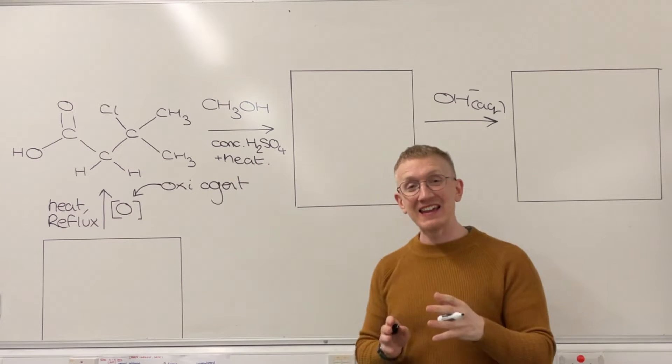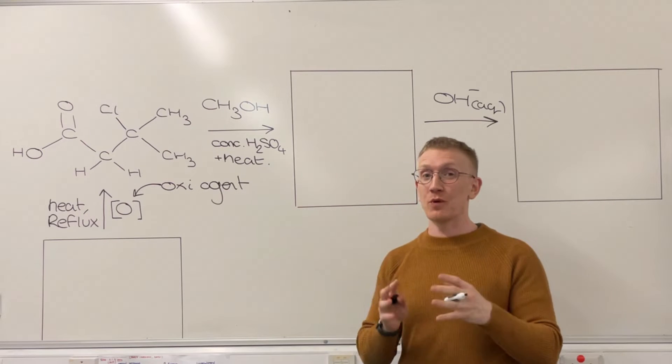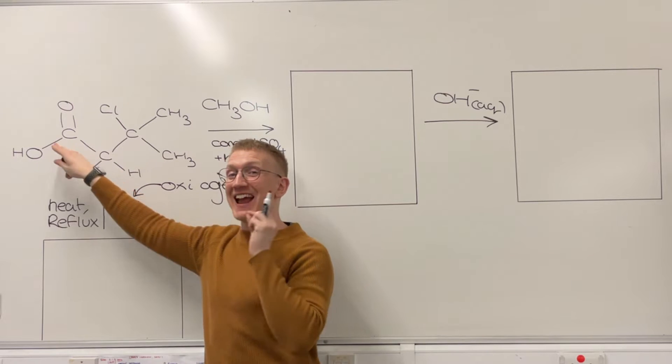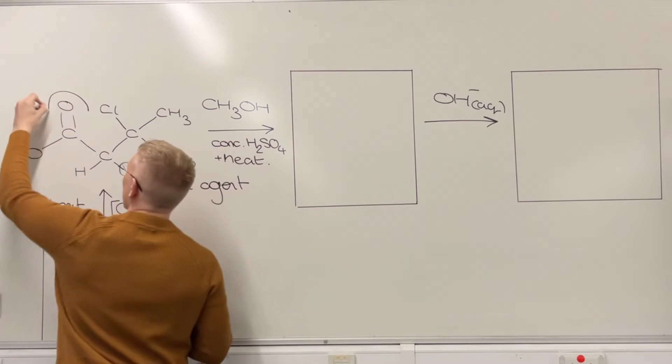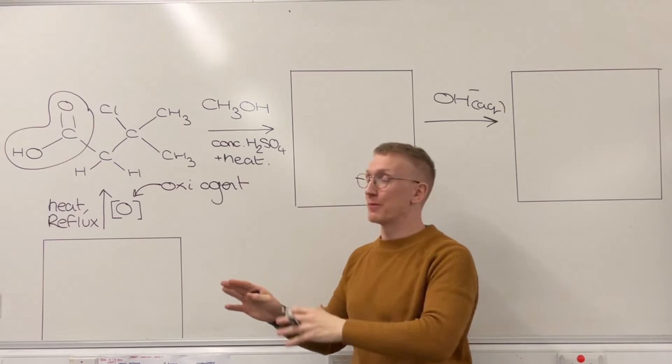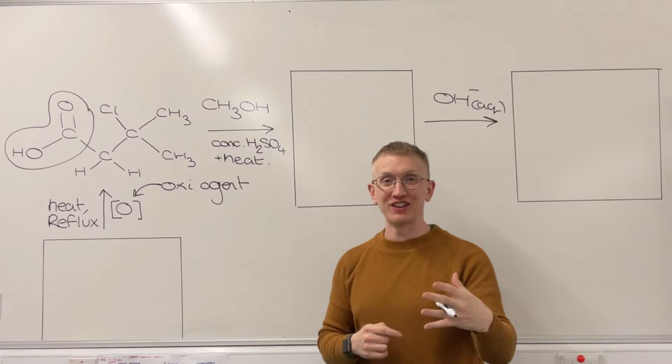For the OCR-A specification in module four, you discover that that is the way we can convert a primary alcohol into a carboxylic acid group. That is my carboxylic acid functional group, made with exactly this set of reagents and conditions.